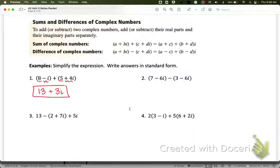Notice the order. The order does matter. I would never write this as 3i plus 13 because the standard form of a complex number is always a plus bi. The i part always has to come last. So for number two, the only thing we would do differently is the 7 minus 6i, that part's going to stay exactly the same. But first I need to distribute this negative. So now I get minus 3 plus 6i.